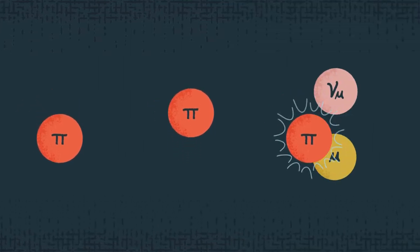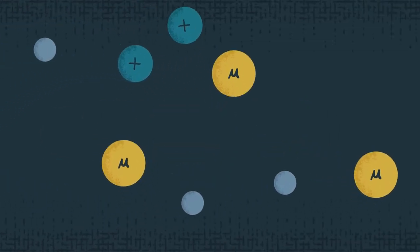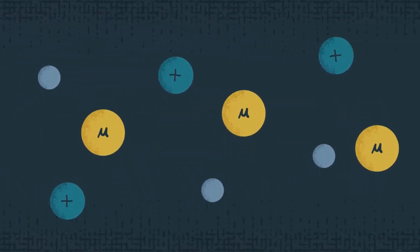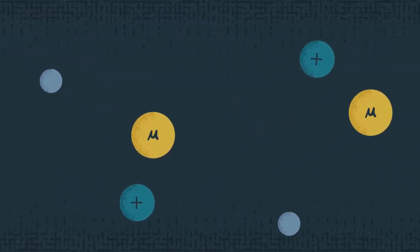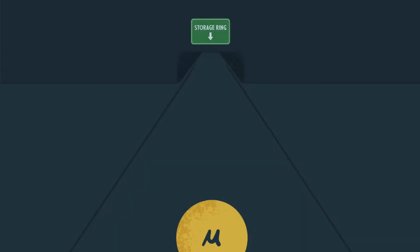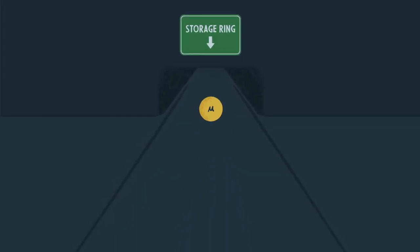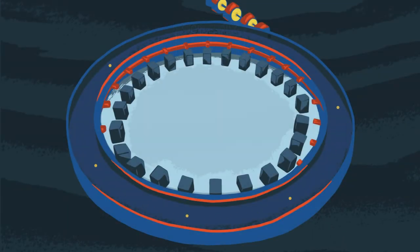The pions decay into muons, and the mix of muons, protons, and other particles travels toward the experimental hall. Magnets prepare the final muon beam. The muons move through a transport line and whiz into the muon g-2 magnet.